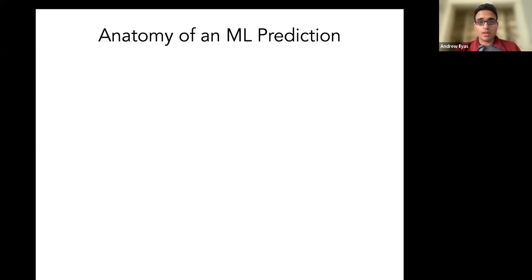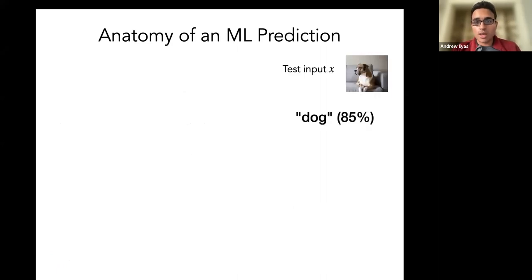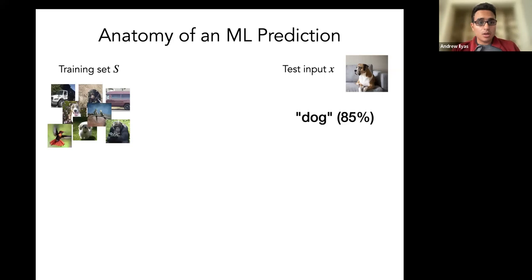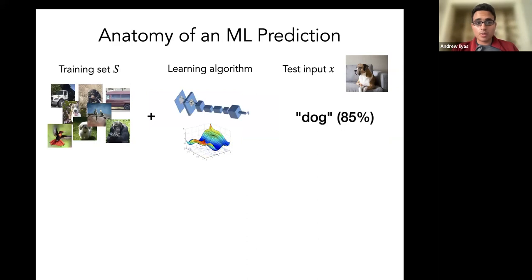I wanted to start this talk out by thinking about what we call the anatomy of a machine learning prediction. Let's start by thinking of just any machine learning prediction. We could be doing image classification, where the prediction consists of an image X and a corresponding label prediction, like dog with 85% confidence. And intuitively, we know that this machine learning prediction is affected by the training set S that we use to train the model and the learning algorithm that we apply to this training set to get the model. And these two factors combine in some way to give us a given machine learning prediction.